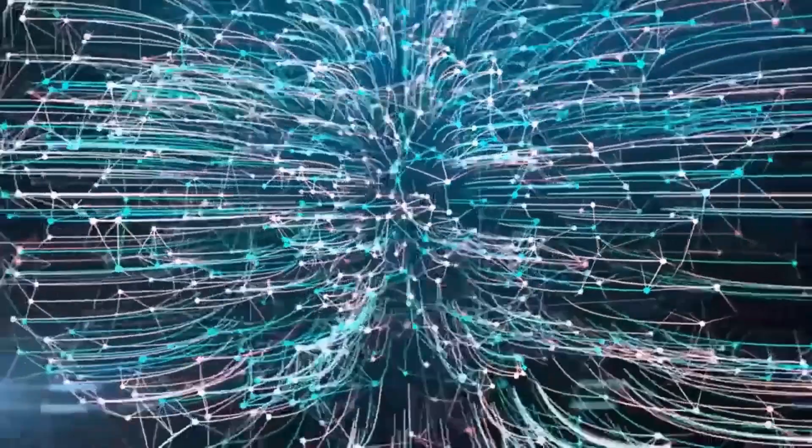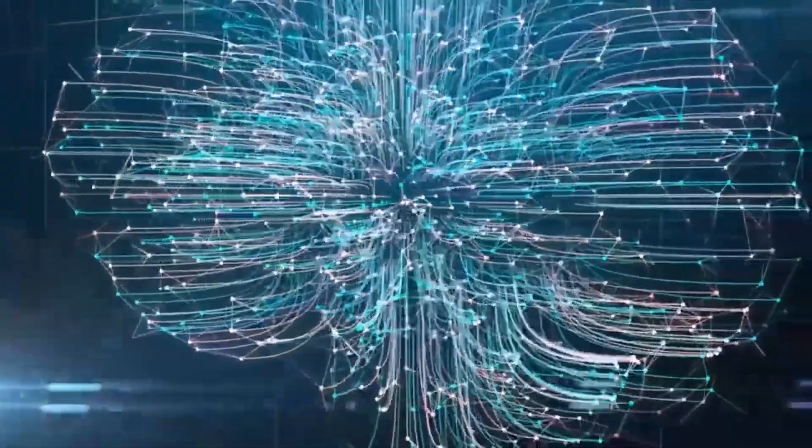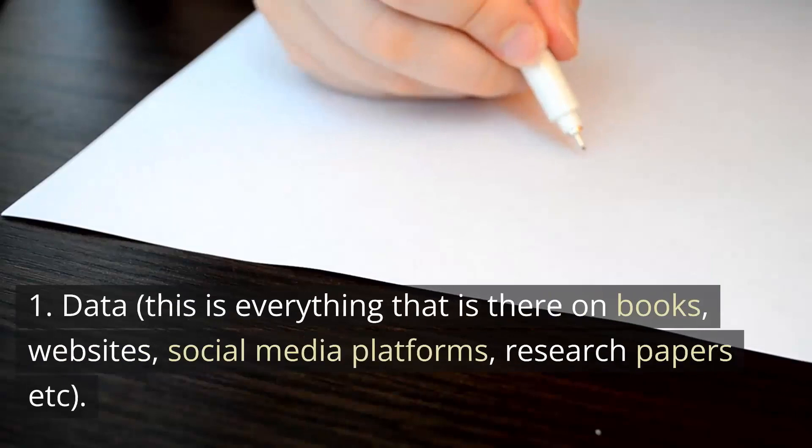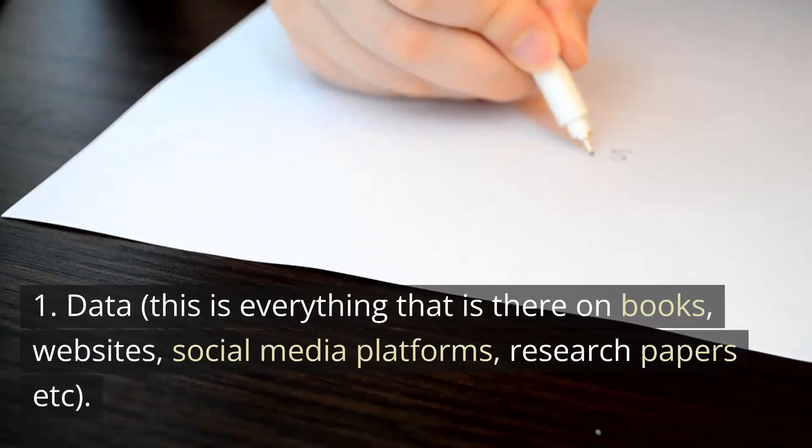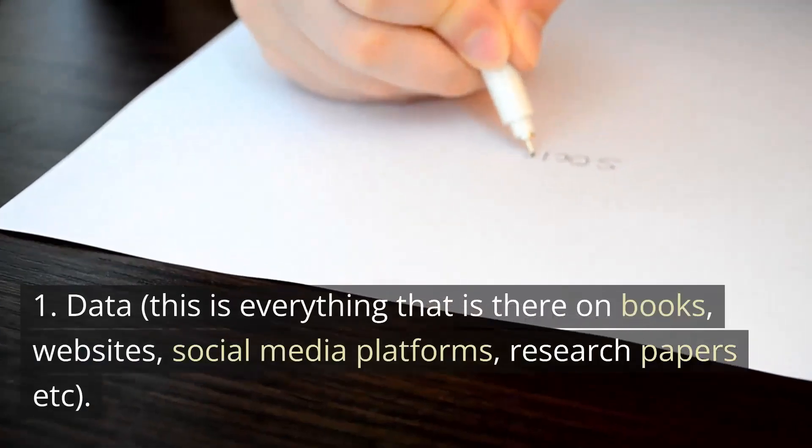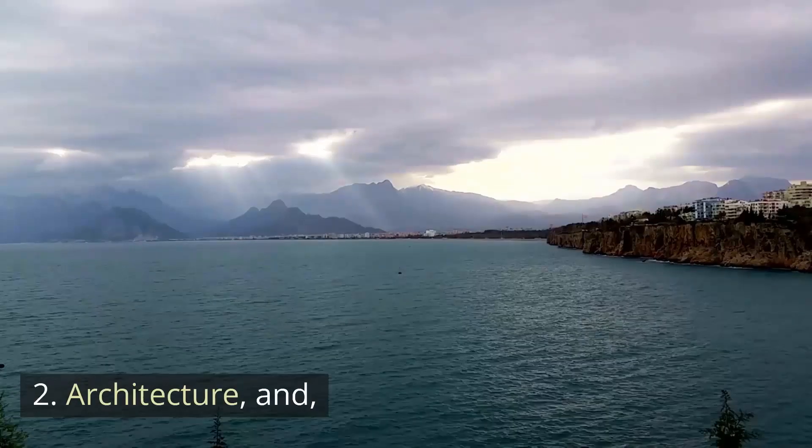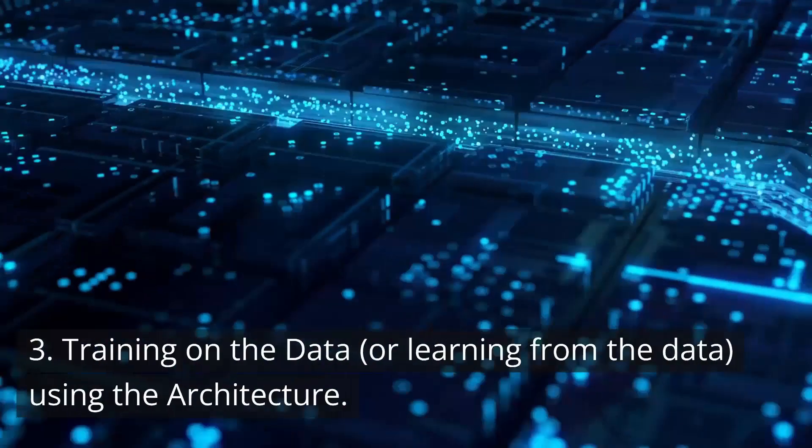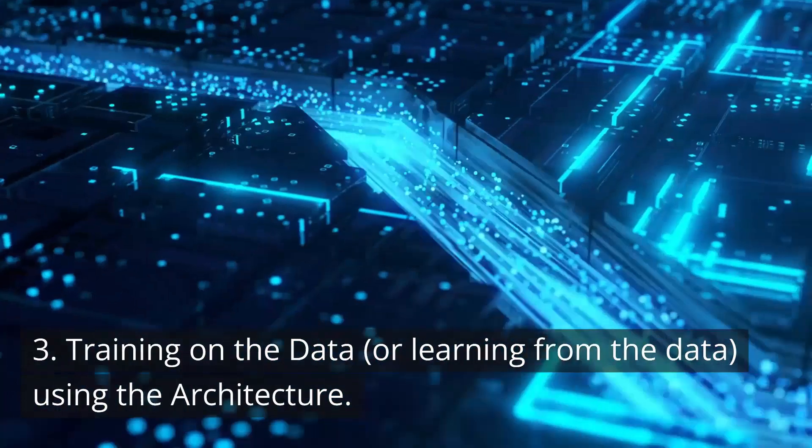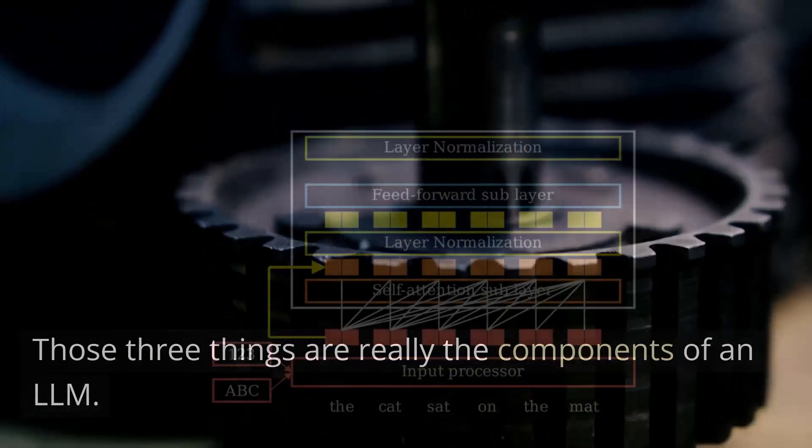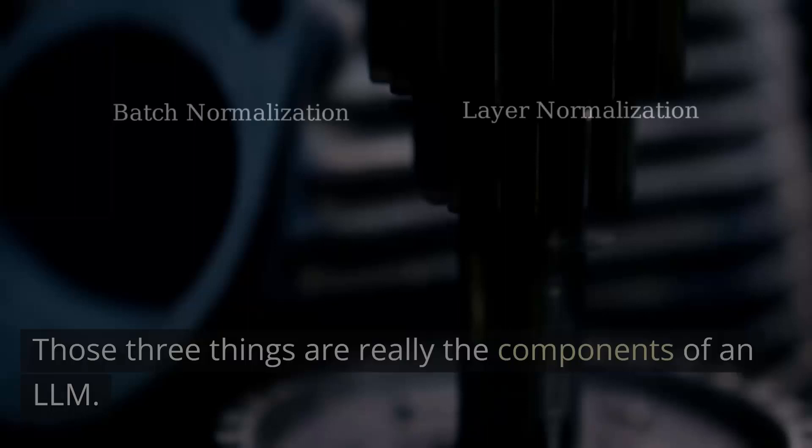So how do they actually work? What happens inside the black box of these neural networks? Well, we can think of LLM as a result of three things. One, data. This is everything that is there on books, websites, social media platforms, research papers, etc. Two, architecture. And three, training on the data or learning from the data using the architecture. Those three things are really the components of an LLM.